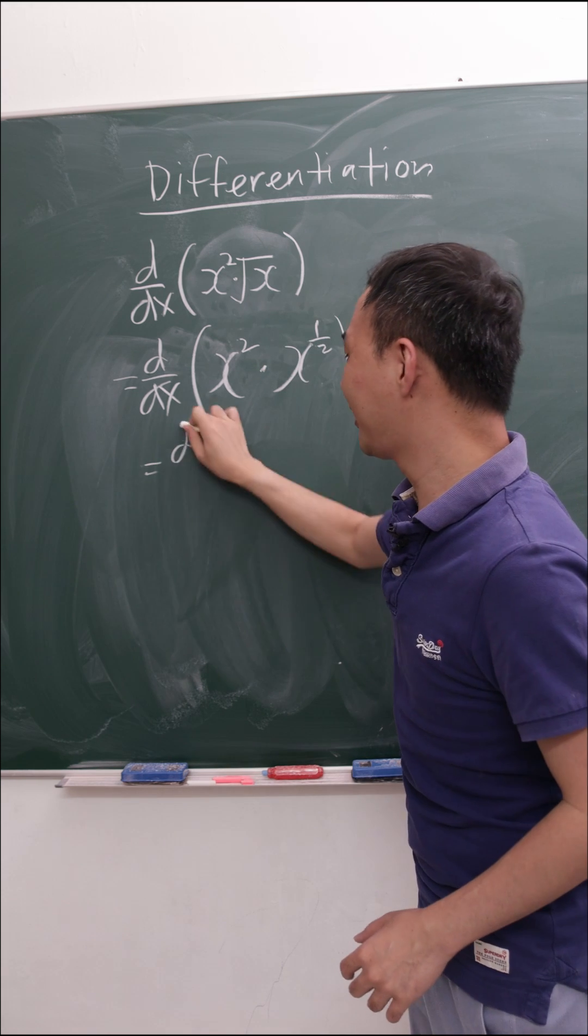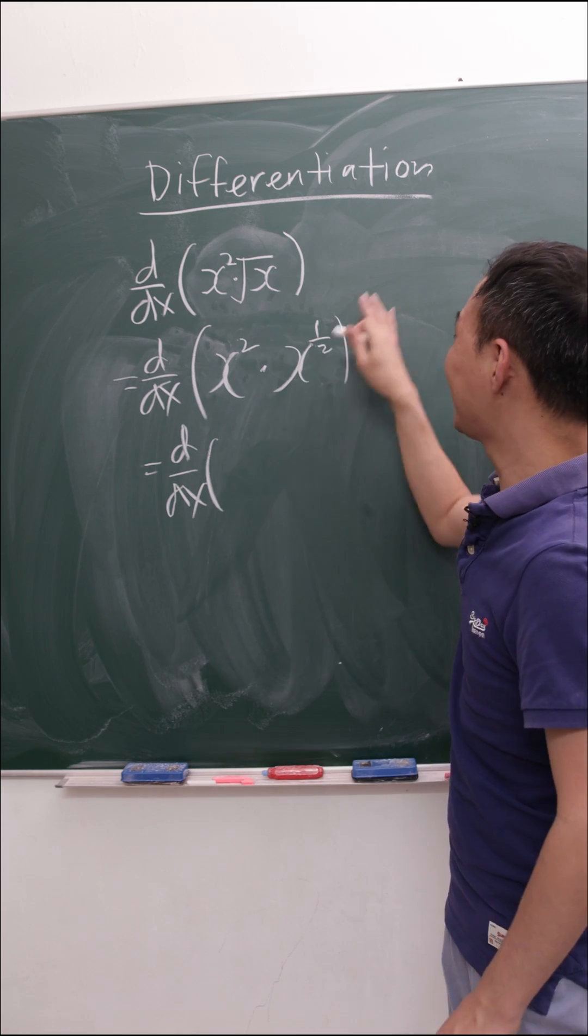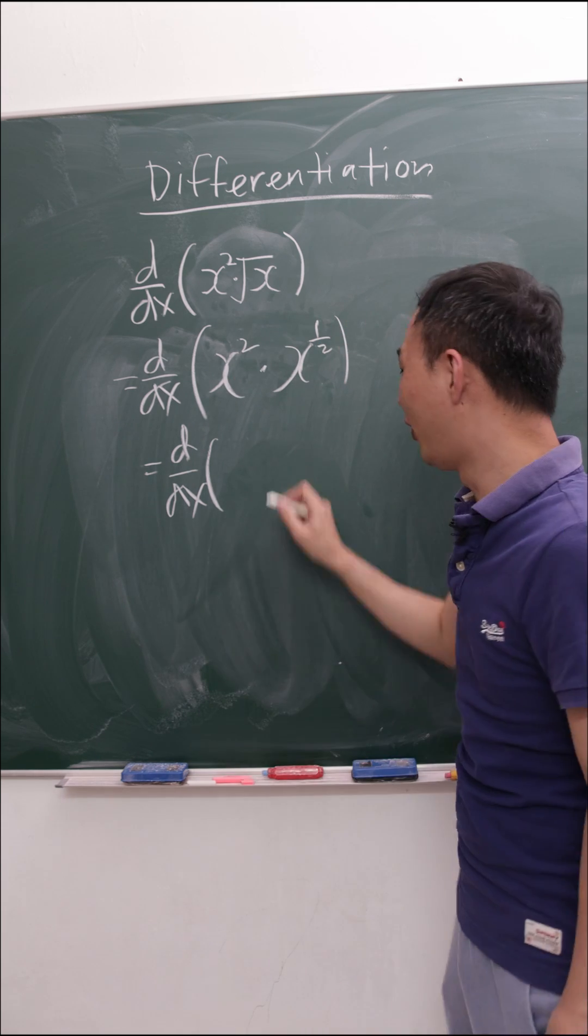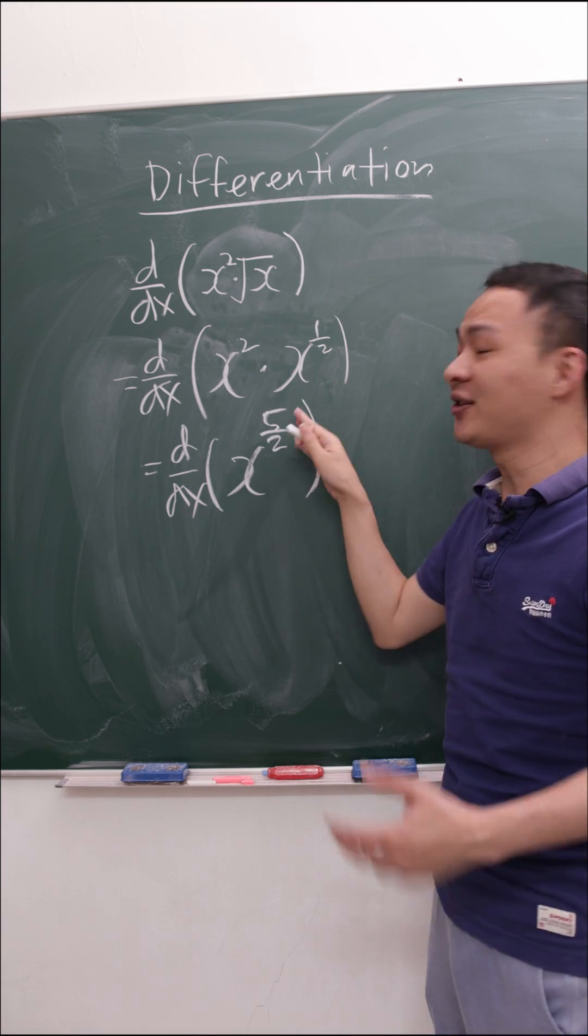Indices tell us, when multiplied, we add the powers: 2 plus 1/2, which is 2.5, or I can say x to the power of 5/2, because this is the same as 2.5.